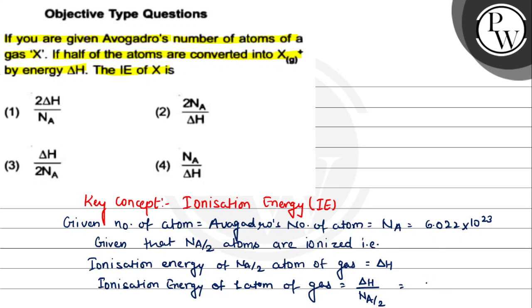We conclude that ionization energy is 2 multiplied delta H divided by Na. Hence, ionization energy of gas X is 2 delta H divided by Na.